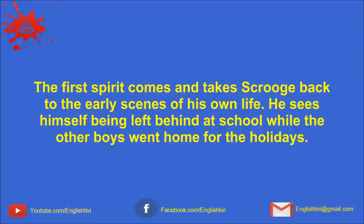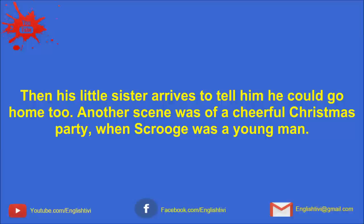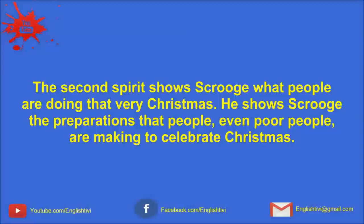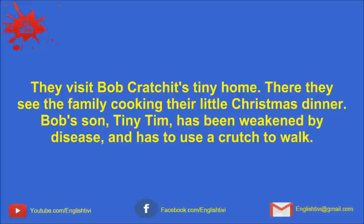He sees himself being left behind at school while the other boys went home for the holidays. Then his little sister arrives to tell him he could go home, too. Another scene was of a cheerful Christmas party when Scrooge was a young man. A third scene showed him with the girl he was planning to marry. She left him because he no longer cared about anything but money. The second spirit shows Scrooge what people are doing that very Christmas. He shows Scrooge the preparations that people, even poor people, are making to celebrate Christmas. They visit Bob Cratchit's tiny home. There they see the family cooking their little Christmas dinner.